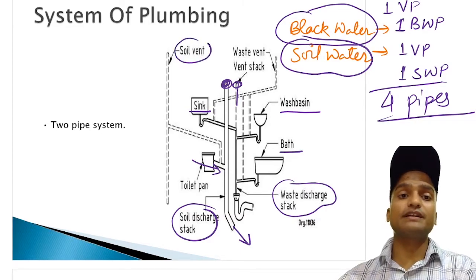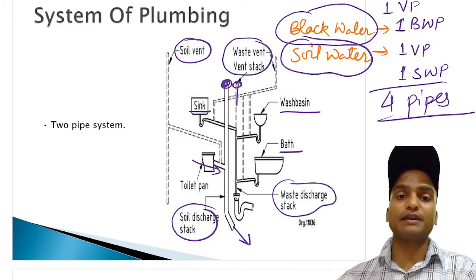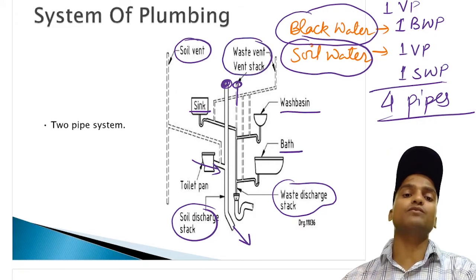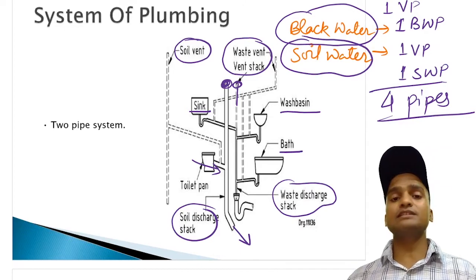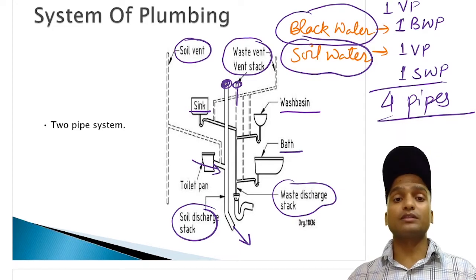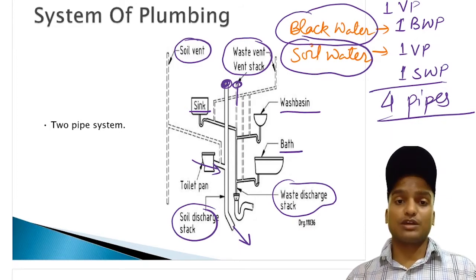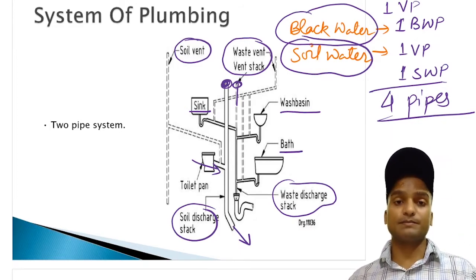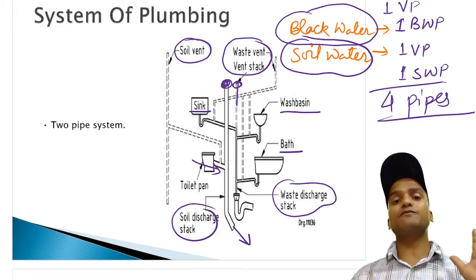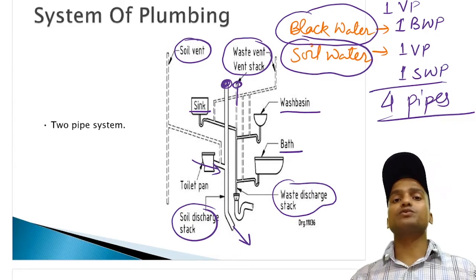Both of these discharge pipes have got separate soil vent pipes. Like, this is the soil ventilation pipe. And this is the waste water ventilation pipe, which is attached to all these fixtures except the water closet. This two pipe system is little uneconomical because we are going to use four sets of pipes. But the system is very effective and the atmosphere inside the house is very ambient. These are the four different system of plumbing.